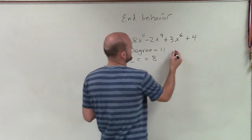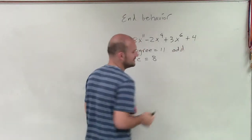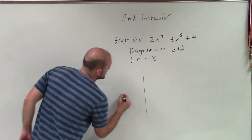Now, the next thing I like to do is determine if the degree is even or odd. Well, the number 11 is odd. So therefore, that's going to produce two different types of end behavior.